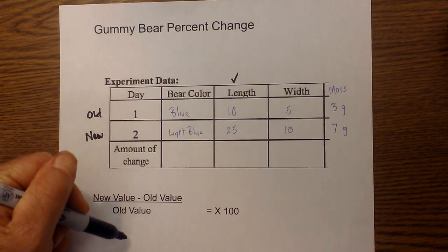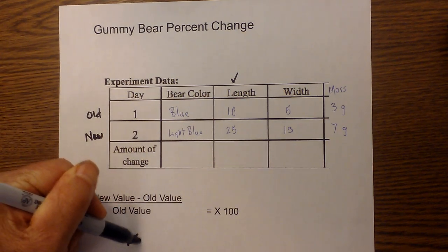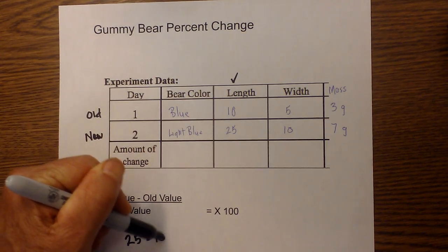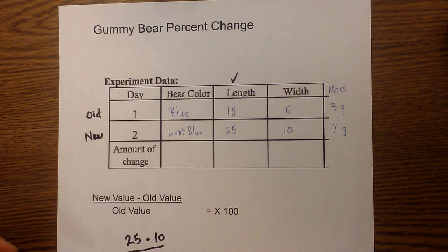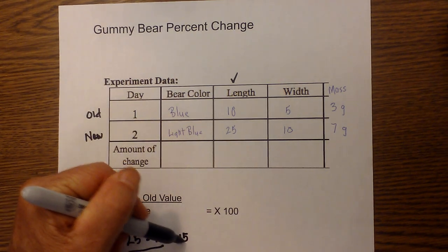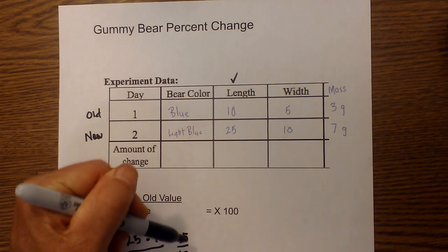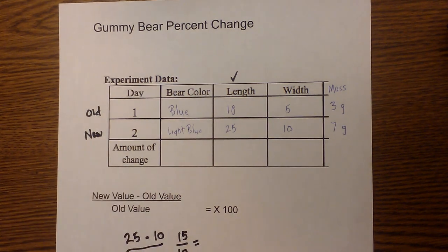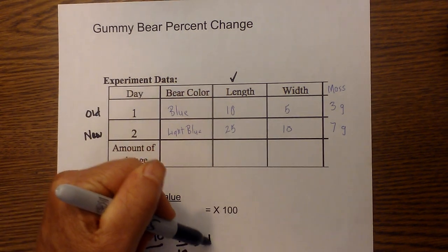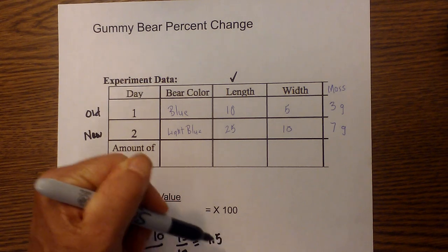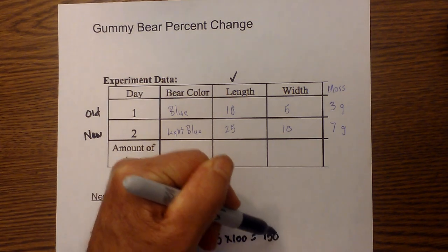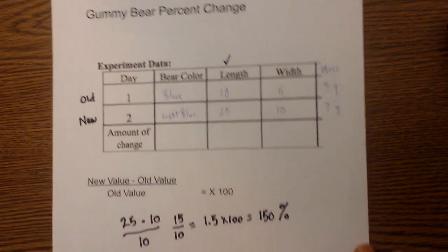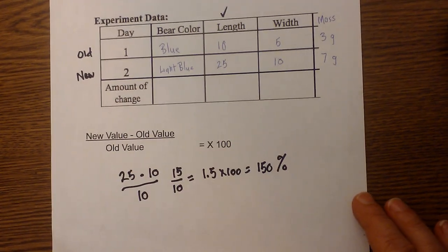So the new value is 25 minus the old value which was 10 over 10, and 25 minus 10 is 15 over 10. Then 15 divided by 10 is 1.5 times 100 equals 150 percent. So the percent change was 150 percent.